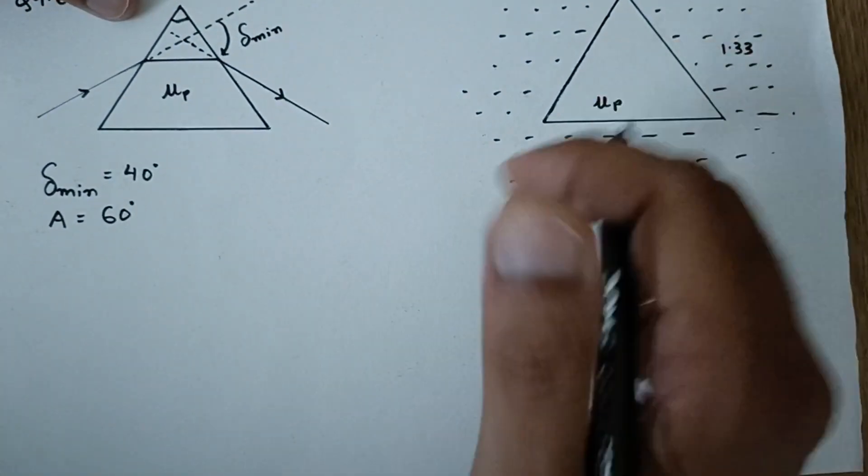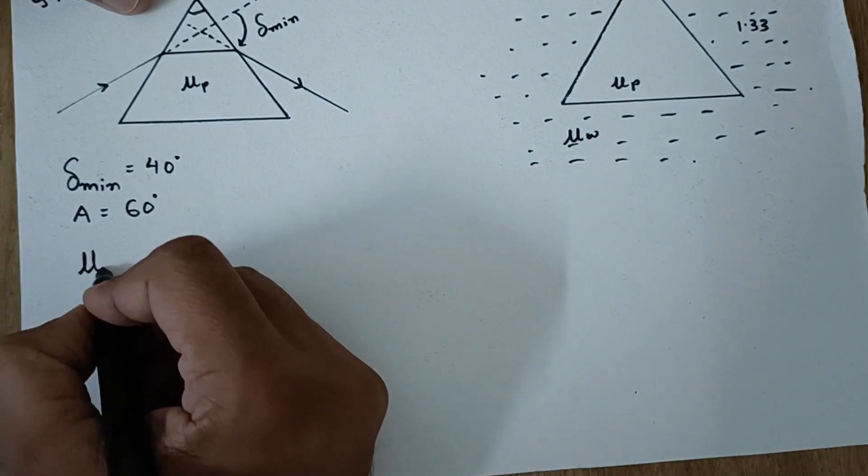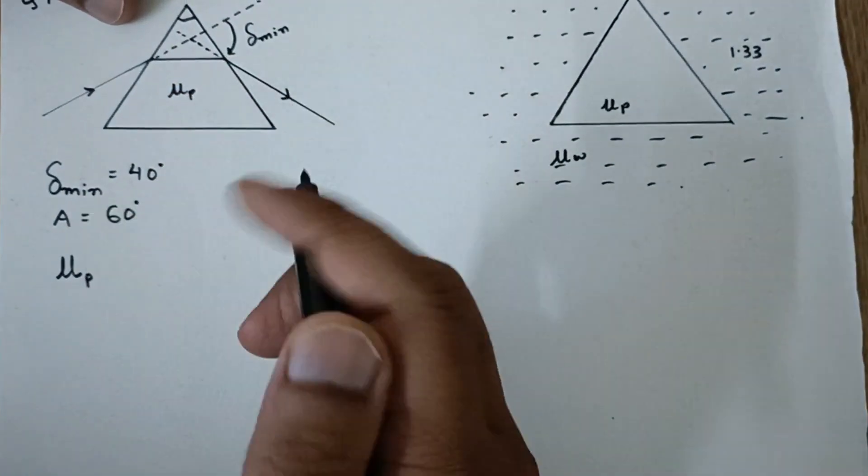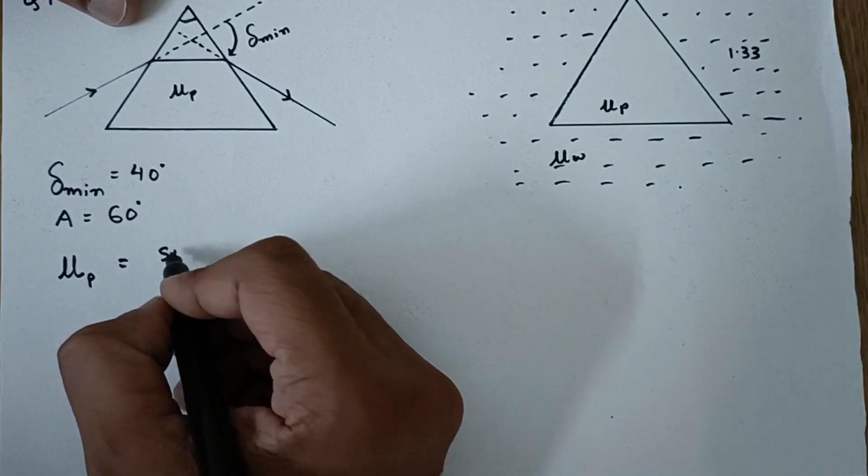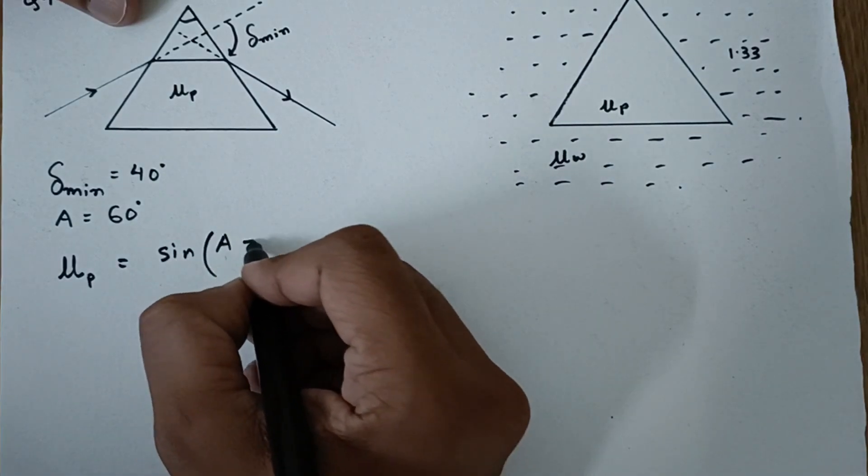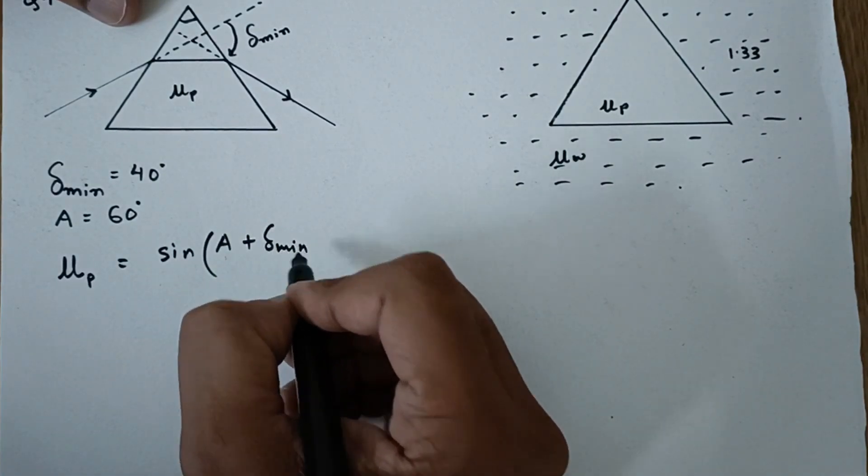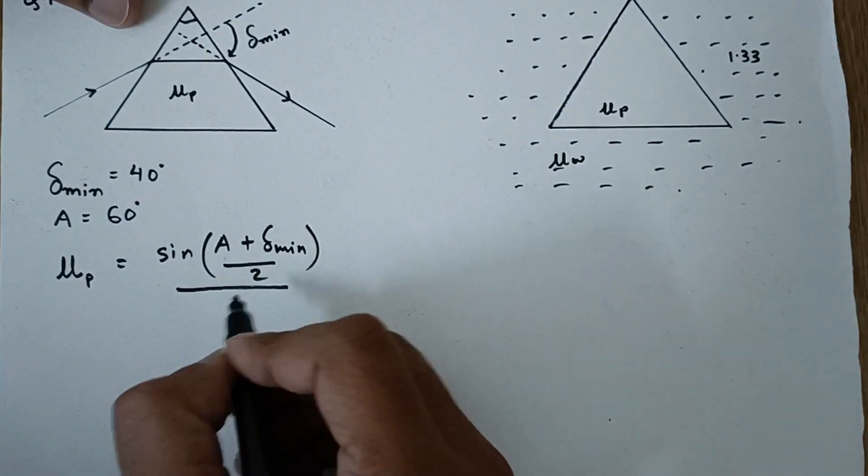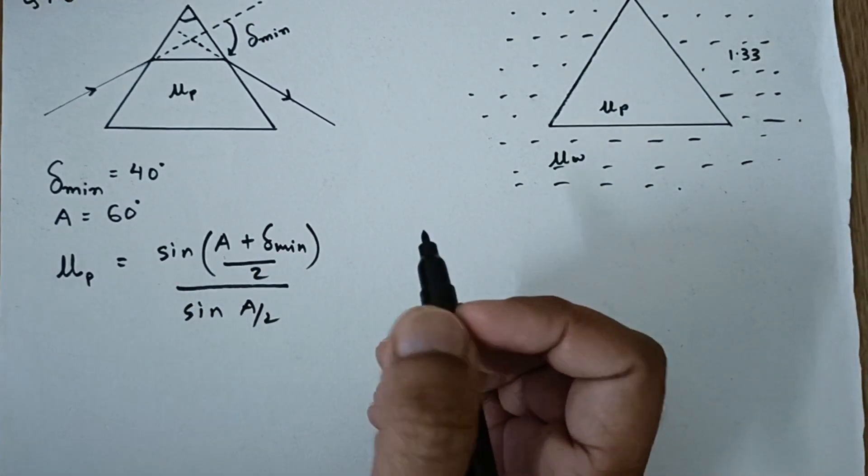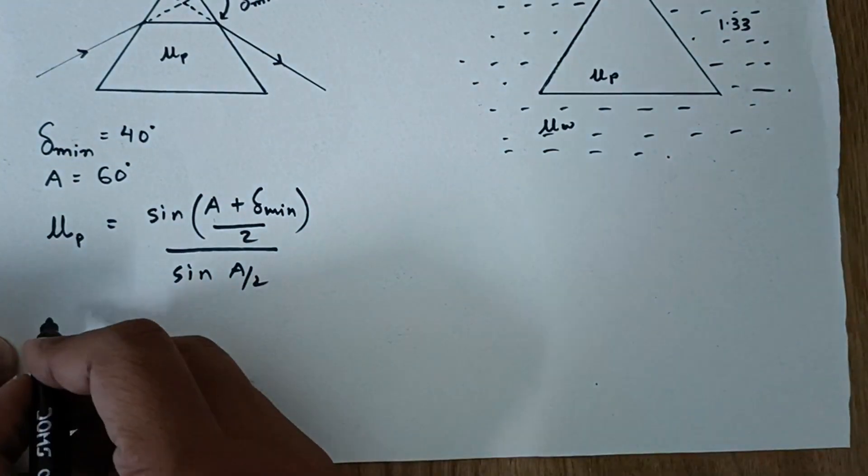So first of all, we do know about this formula that refractive index of the prism that is in air right now, that is equal to sin of A plus delta minimum by 2, divided by sin A by 2. Now we know all the values. Let's plug in.